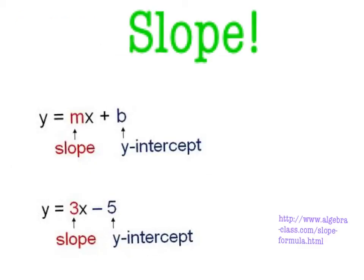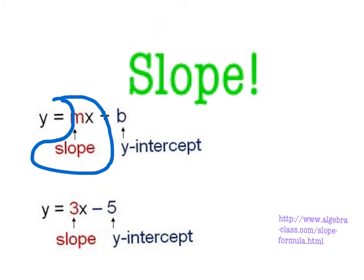A slope is found in your equation or on your graph. Shown here, you can find it in your equation. It's the number before the x, or on your graph.